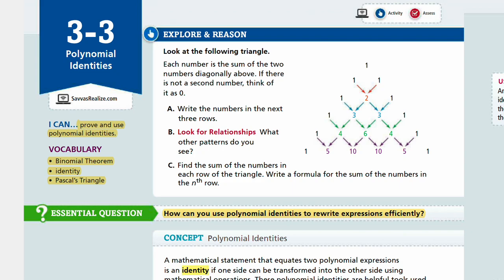Let's start with exploring reason. Look at the following triangle. Okay, so we're looking at the whole triangle here. Each number is the sum of the two numbers diagonally above. So 1 is from 0 plus 1, and this 1 is also 0 plus 1. And then 2 is 1 plus 1, and 1 here is 0 plus 1, and so on. So if there is not a second number, think of it as a 0.